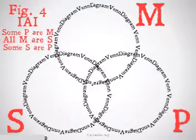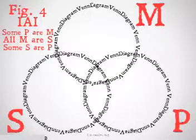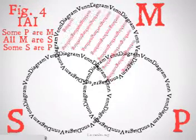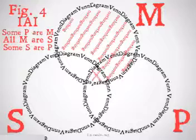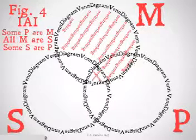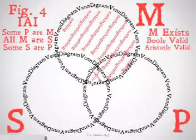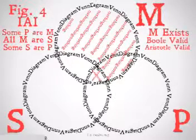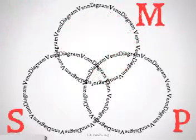Figure 4, IAI: Some P are M, all M are S, therefore some S are P. We will fill these in and we will see that this is going to be valid for Boole. We don't have to worry about putting a circle and an X around it because, based on our first two premises, we're able to get Boolean validity, which gives us Aristotelian validity. It doesn't matter that M exists — it's going to be valid for both Boole and Aristotle.